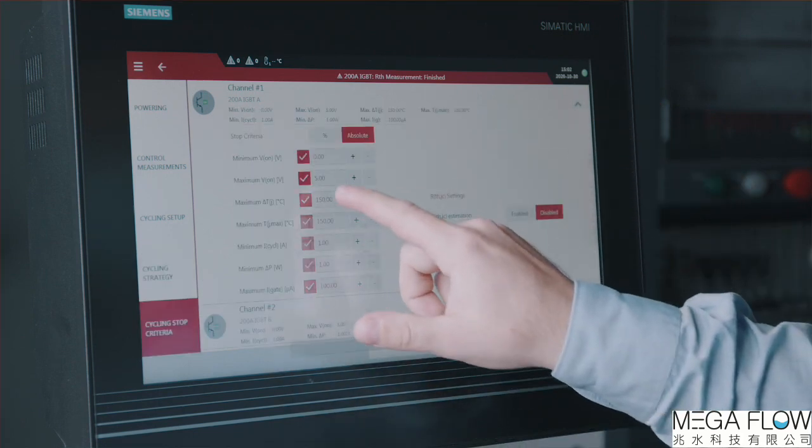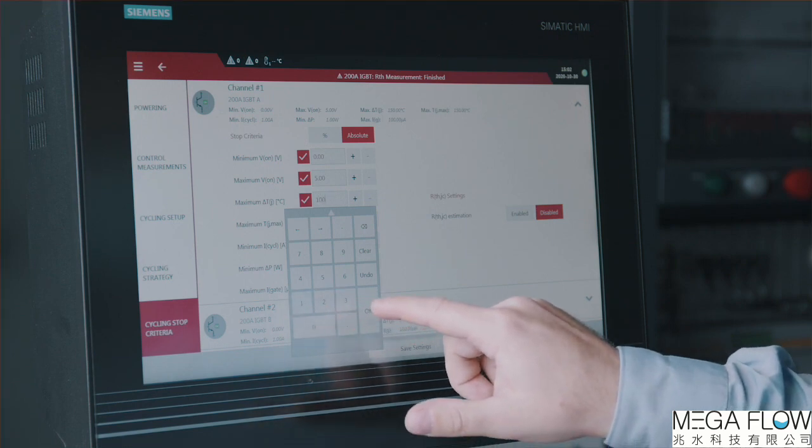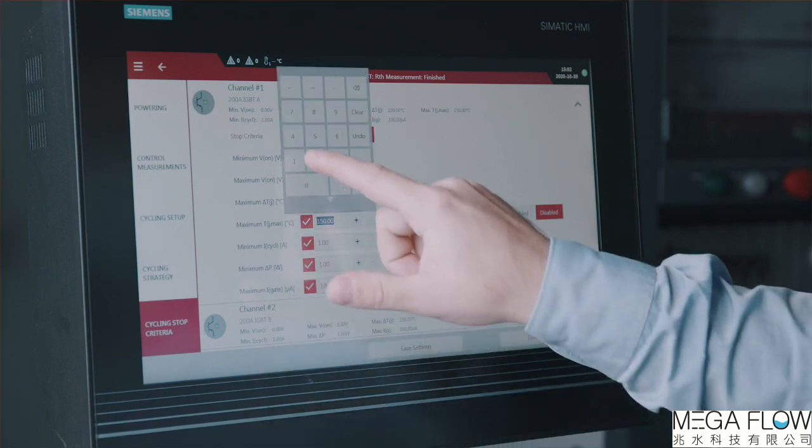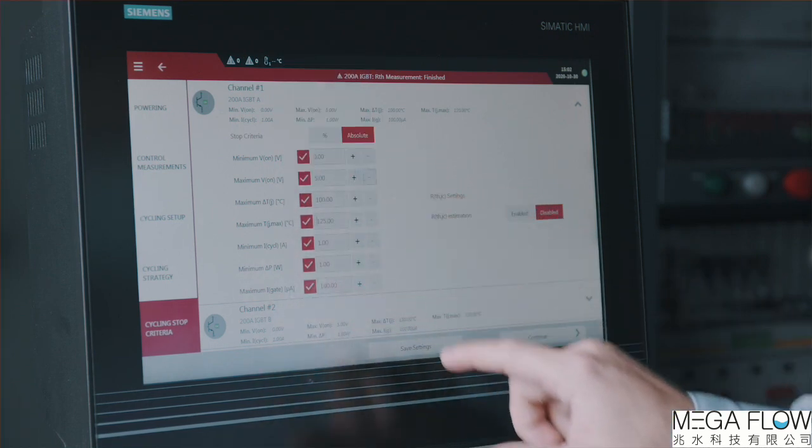Finally, the cycling stop criteria needs to be defined. The system monitors several parameters in each cycle, and if they exceed a certain threshold, the cycling is stopped automatically. Once the power cycling started, it will run automatically for days, weeks, or months, until the set maximum cycle number or another cycling stop criteria is reached.